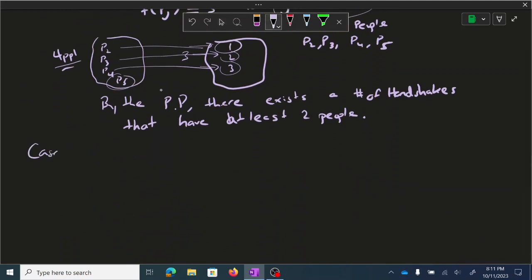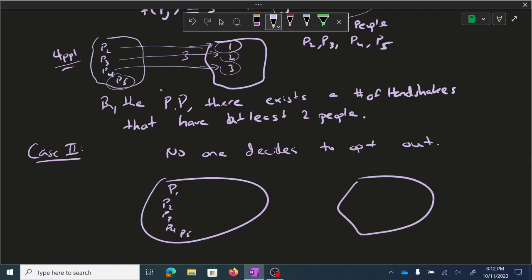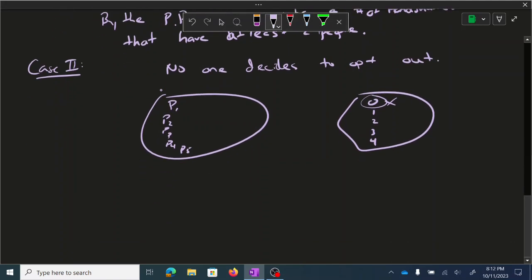Case two. Let's say everyone or no one decides to opt out. So we have P1, P2, P3, P4, P5. We have zero, one, two, three, four. Well, so zero is no longer an option for any of them because no one decided to opt out. And so now, again, we have this five-person set getting mapped to a four-element set.